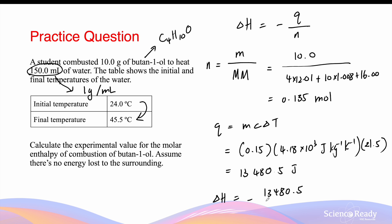Therefore the molar heat of combustion of butanol is minus 13,480.5 joules — because there are no energy losses to the surrounding — divided by the moles of butanol combusted, which is 0.135 moles. This gives a value of 9.99 times 10 to the power 4 joules per mole.